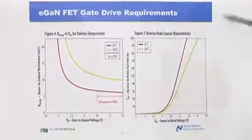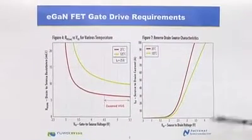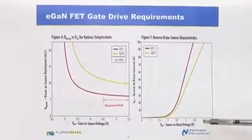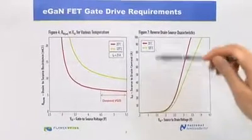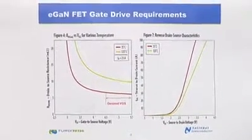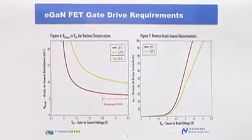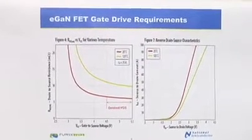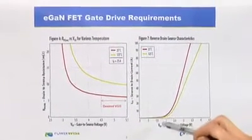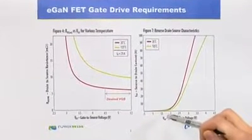And on the right side is a plot which shows the reverse drain-to-source voltage versus the drain current. Because of a lack of the body diode of the GaN FET, the source-to-drain voltage can be higher than 1.5 volts. That will cause the problem.